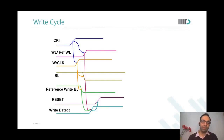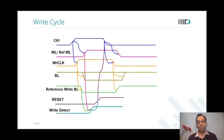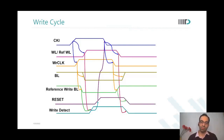After the reset comes, the clock internally resets. Subsequently, word lines get reset. Bit lines are pre-charged. And after the bit lines are also pre-charged, everything is done. Write detect goes down and reset goes down.